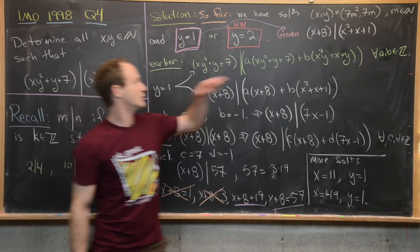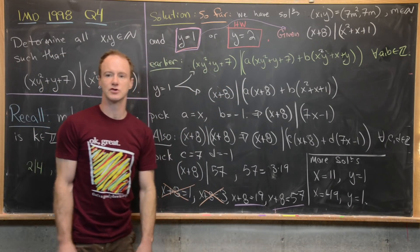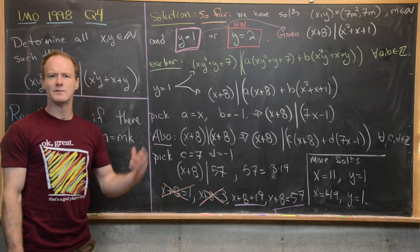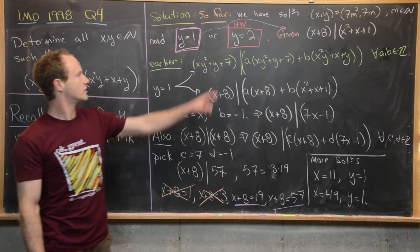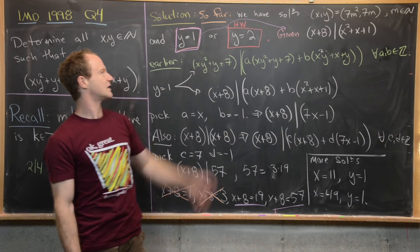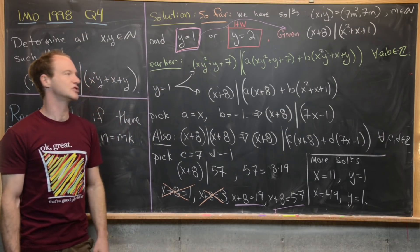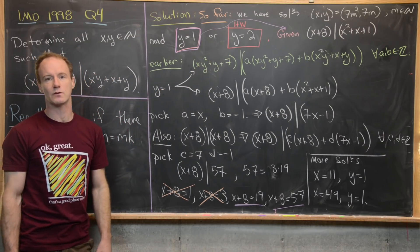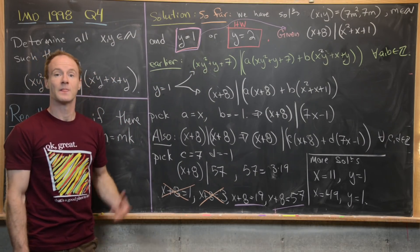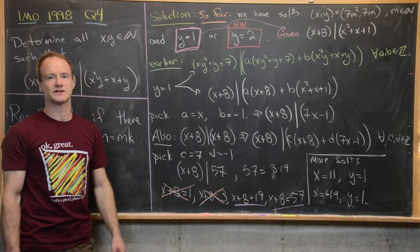So far we have the infinite family (7m², 7m) for all natural numbers m, and the two sporadic solutions (11, 1) and (49, 1). Try to find any solutions where y = 2 on your own. And that's a good place to stop.